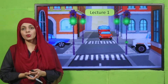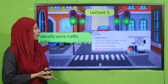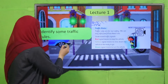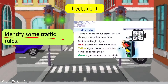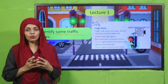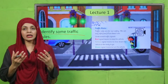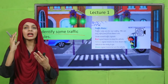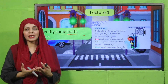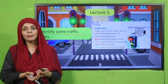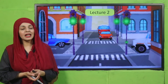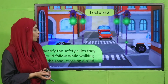By the end of this unit, students will be able to identify some traffic rules. In lecture number one, kids will be able to identify traffic signals or traffic lights and will be able to tell what they mean.